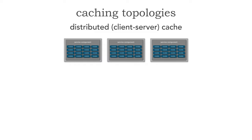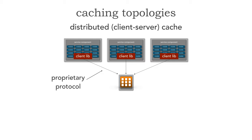So let's take a look at a distributed or client-server cache. Let's say that these are my three services right here. With distributed caching, rather than having the cache in memory in each of these service components, I have that cache external in a server or another service. Then I have a client library in each of these service components, such as Apache Ignite, that allows access to that cache.